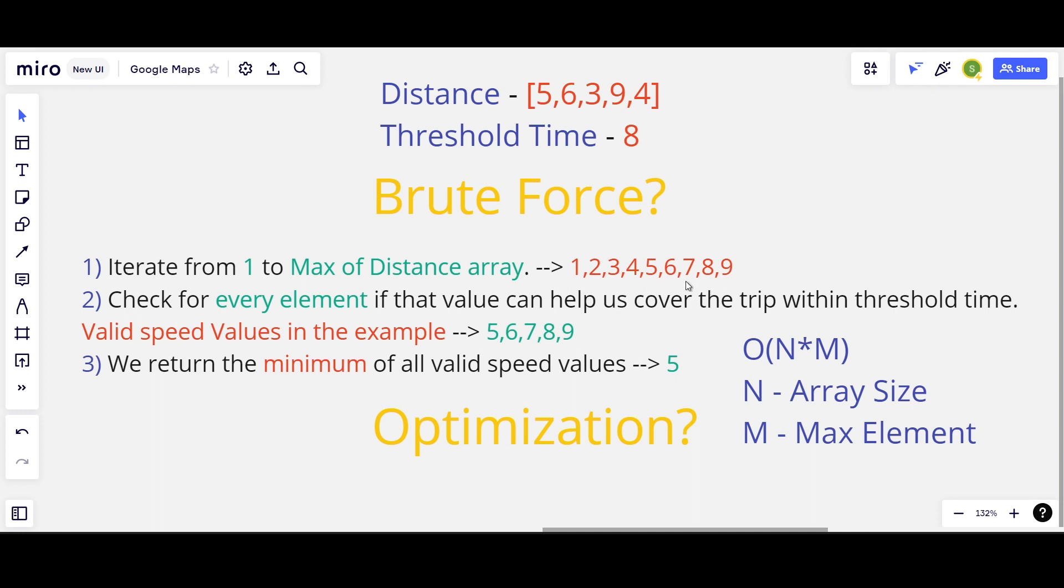We can iterate from 1 to 9 and check for every element if that is a valid answer and finally return the minimum of those valid answers. This process will take at worst O(N*M) where N is the number of elements in the distance array and M is the maximum element in the distance array.